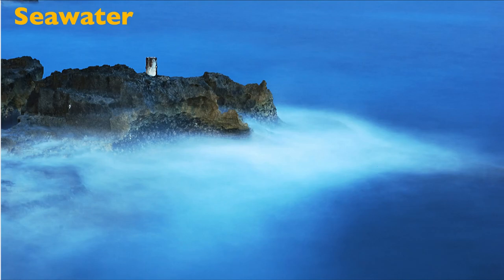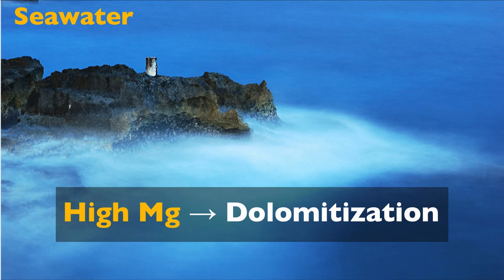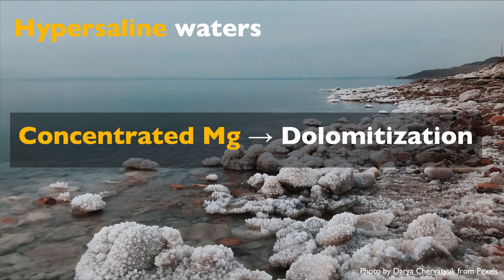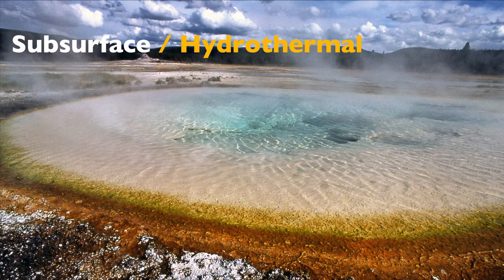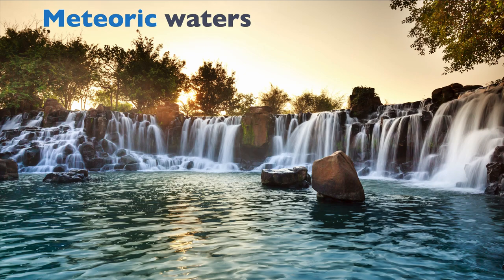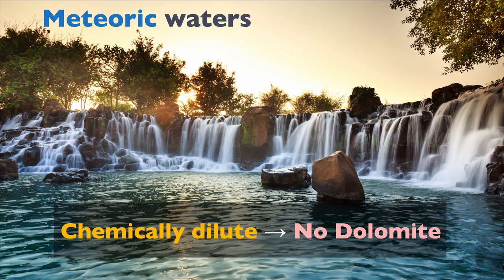What we do understand is what fluids lead to dolomitization. The first fluid is simply seawater — there is magnesium in seawater, so you can potentially create dolomite. The other fluid that can lead to dolomitization is hypersaline waters, because hypersaline waters concentrate magnesium, making dolomitization relatively easy. Subsurface or hydrothermal fluids also tend to be saline, enabling dolomitization, and the higher temperature further favors the process. Meteoric water, however, is chemically dilute, so it lacks sufficient magnesium and dolomitization is not possible in meteoric water.